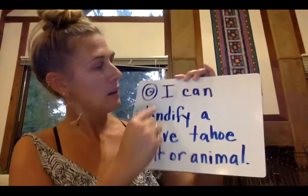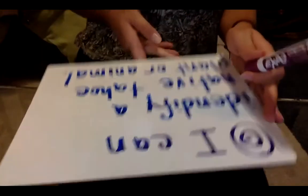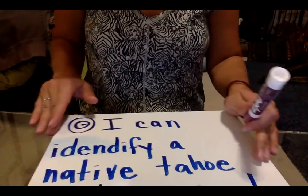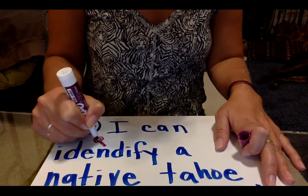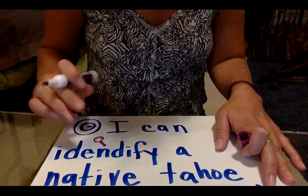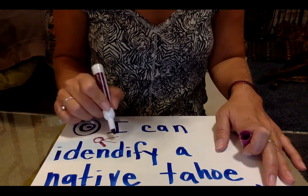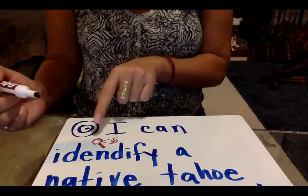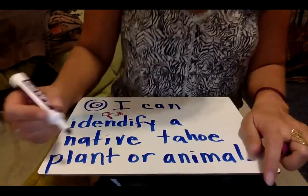Here's the learning target: I can identify a native Tahoe plant or animal. So 'identify' means find, and I'm actually going to draw a picture — I'll draw a magnifying glass. That's what this is. We use it to look closely at something, and maybe we're looking closely at a little flower. So: identify a native Tahoe plant or animal. We know what a plant is, and I'm just going to draw a picture of a plant.